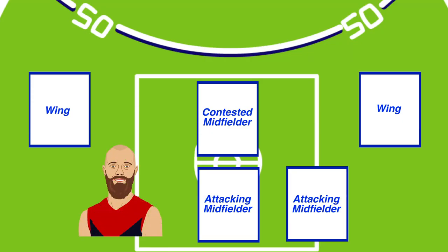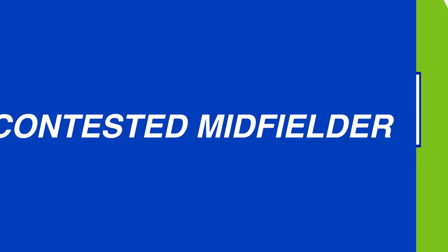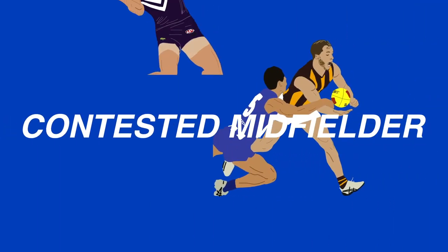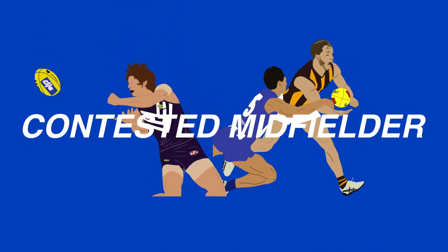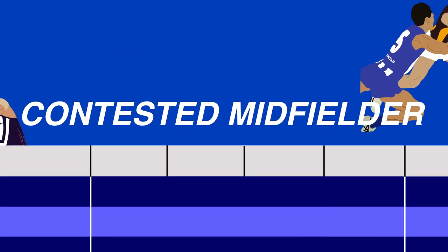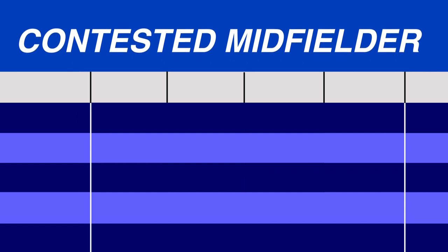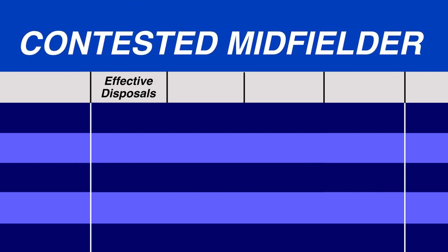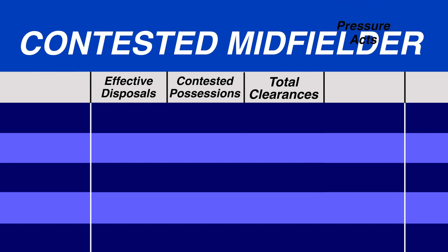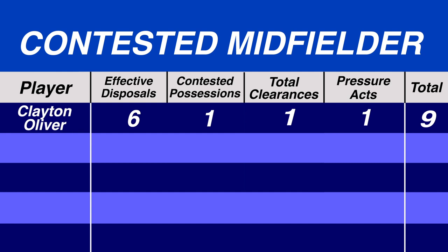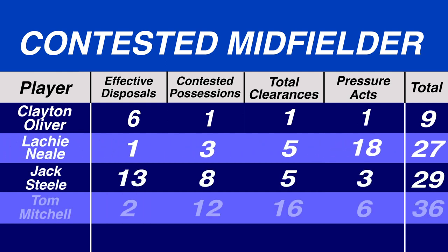To anchor the centreline, we wanted the best contested ball winner in the league — players who win first hands on the football and provide stability for the more dynamic mids alongside them. The statistics that decided this player were effective disposals, contested possessions, total clearances, and pressure acts. These categories were destroyed by Clayton Oliver, who topped 3 out of 4 columns on 9 points, 18 ahead of 2nd placed Lachie Neale.